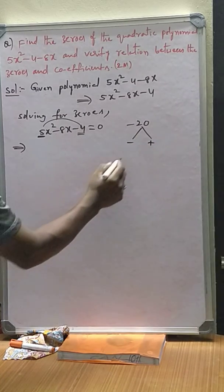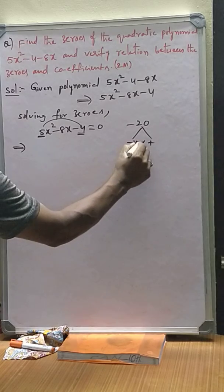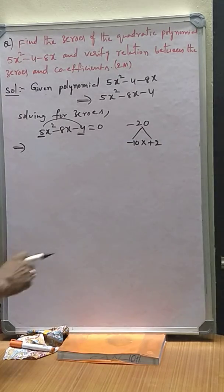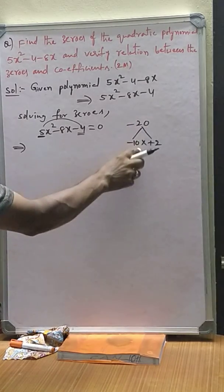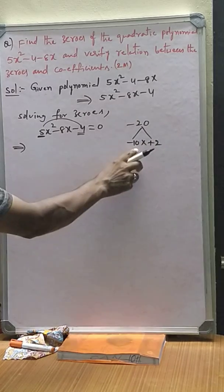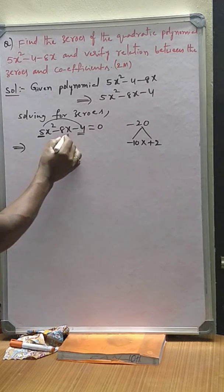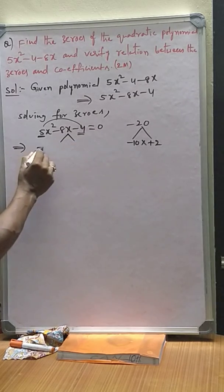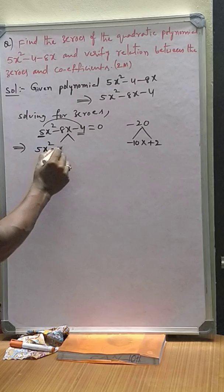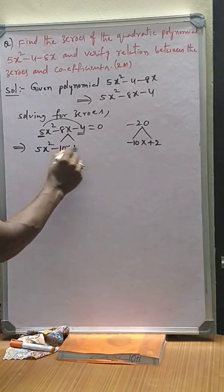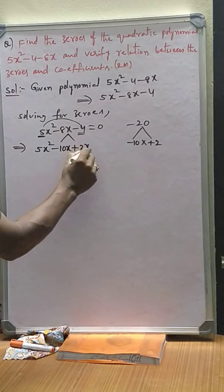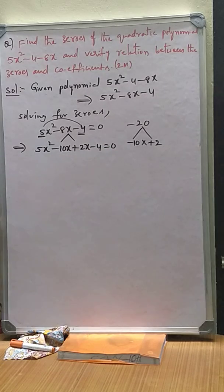As the product is negative, negative into positive. I would like to take 10 times 2: -10 and +2. The sum of these two factors is -8. By using these factors, let us split the midterm.